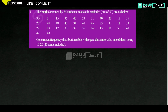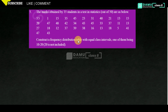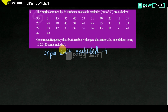In this module we are going to discuss the marks obtained by 35 students in a statistics test out of 50. Construct a frequency distribution table with equal class intervals, one of them being 10 to 20 (20 not included) — that means exclusive class intervals. We have to find the length and range. Number of class intervals can be taken as needed.